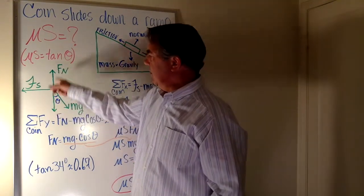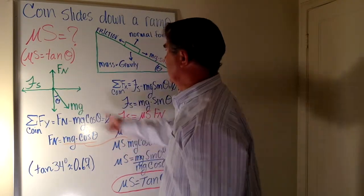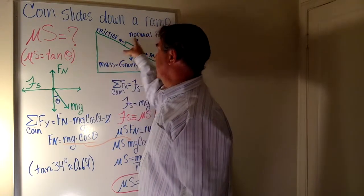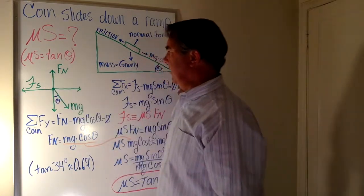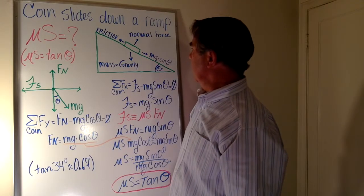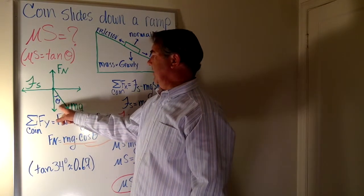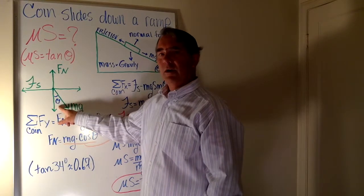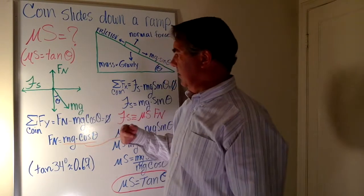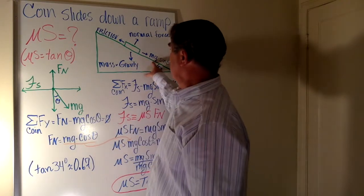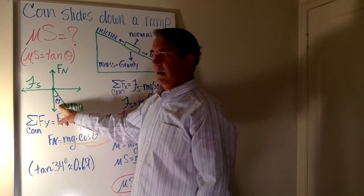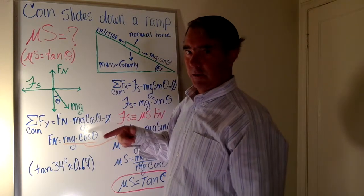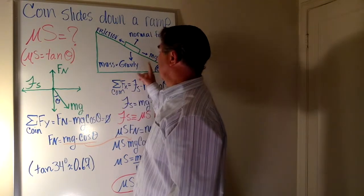Along the y-axis, the normal force points directly up in the positive y direction. The force of static friction is at a right angle in the negative x direction to the normal force. This angle theta here is equal to this angle here — they are the same value. If it is unclear why these angles are equal, post a comment and I can do a separate video explaining and proving it.